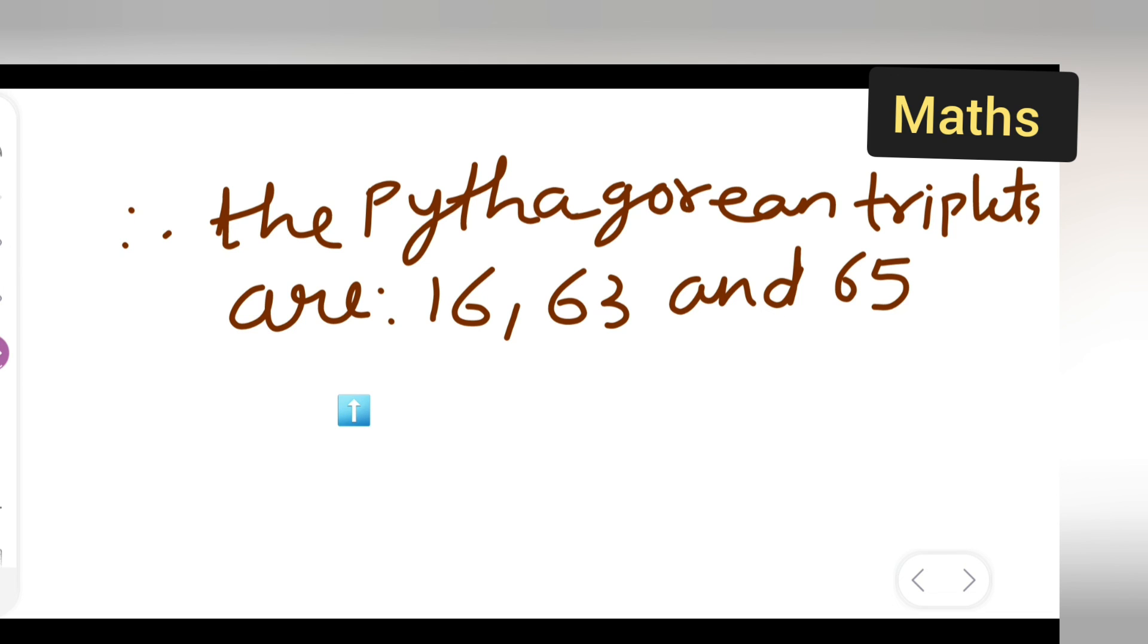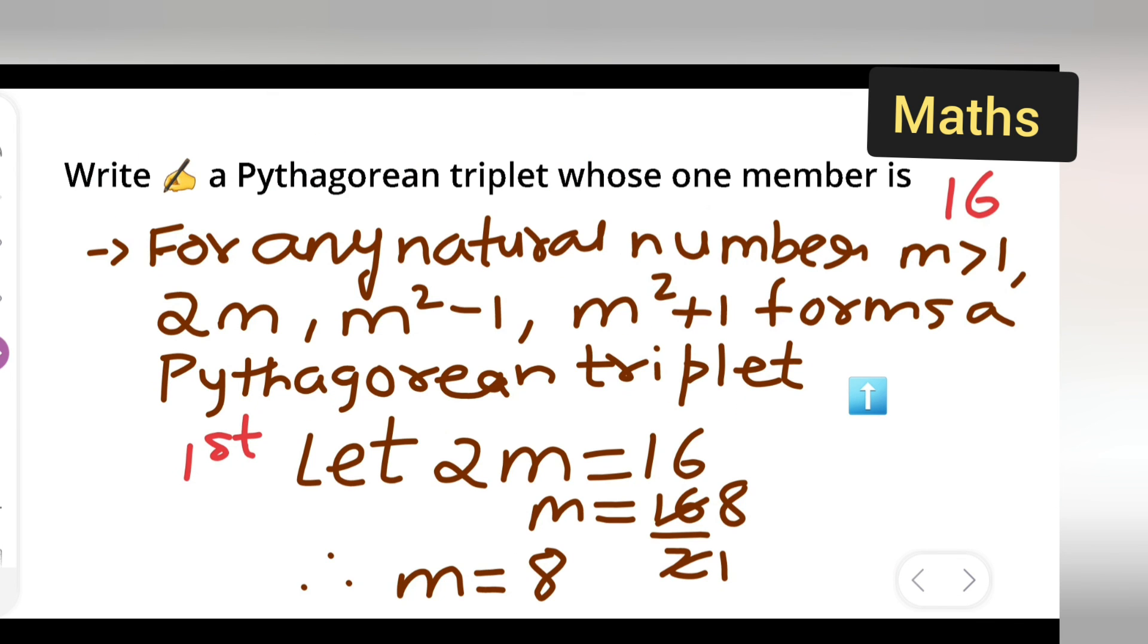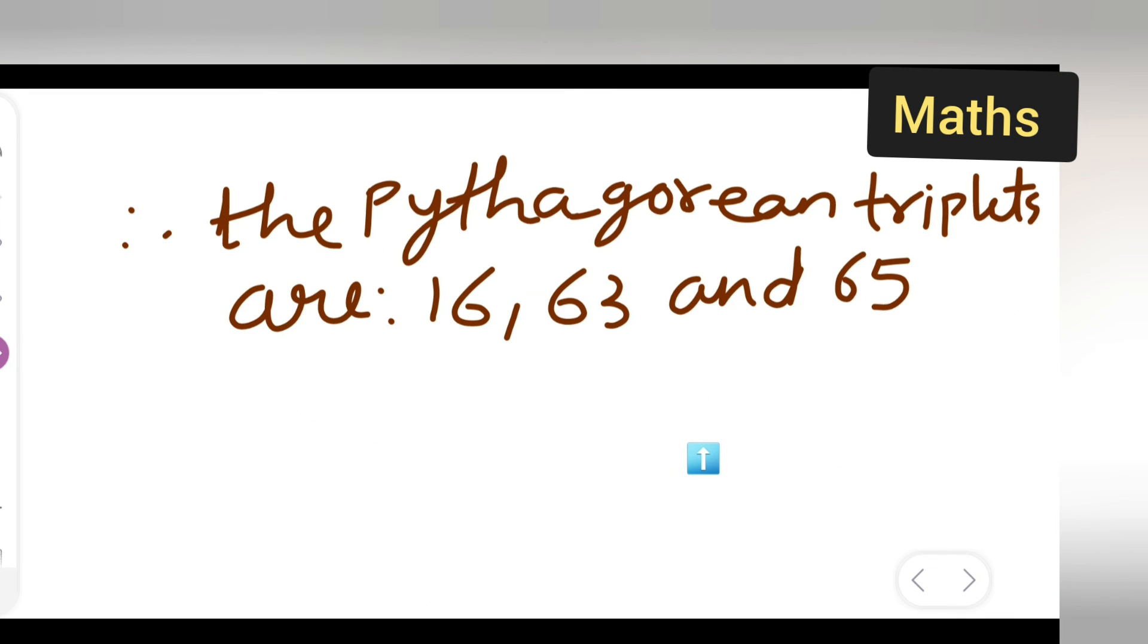So I hope you will have understood how to solve, how to write a Pythagorean triplet whose one member is 16. So I hope you will have understood. Thanks for watching.